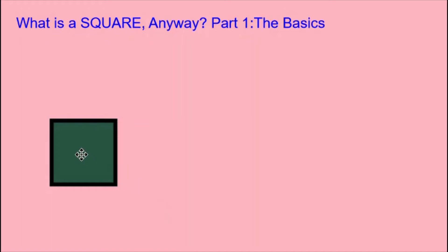A square is a four-sided figure, a quadrilateral. It is a two-dimensional figure. It does not have volume. Let's look at the definition of a square.